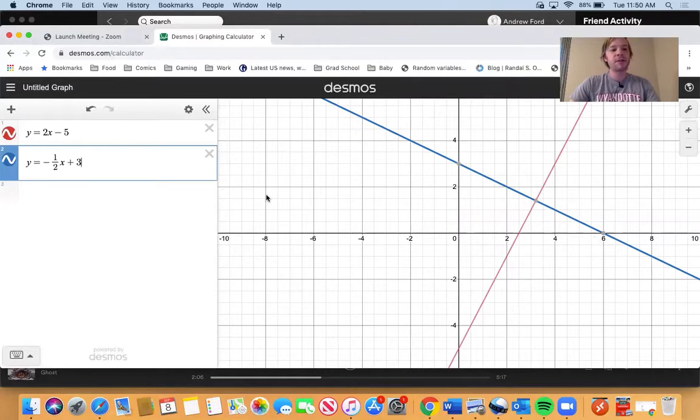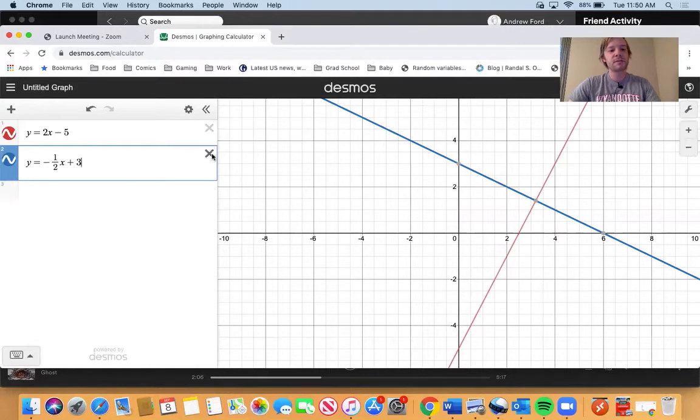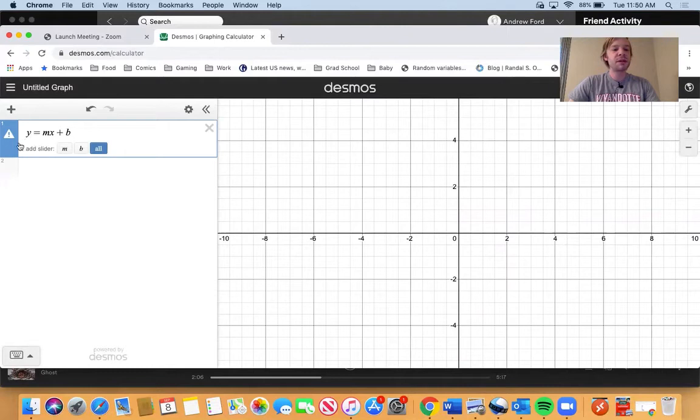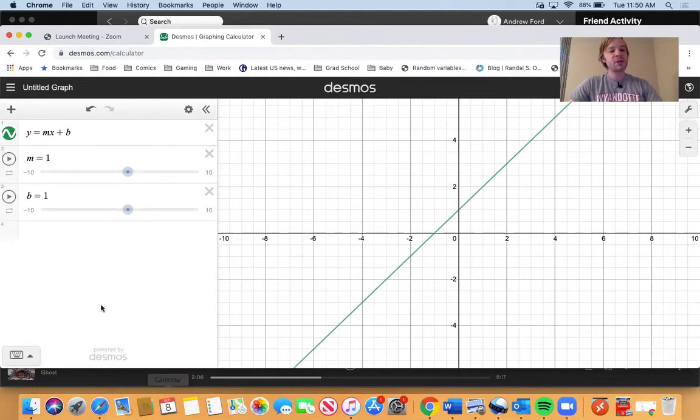But let's say we want to play around with a lot of things. Let's say we want a line that we want to adjust and change as we go. I'm going to delete these two lines first by clicking the x's, and then I'm simply going to type in y equals mx plus b. When I do this, you see down here it says add slider for m, b, or all. I'm going to go ahead and click all.